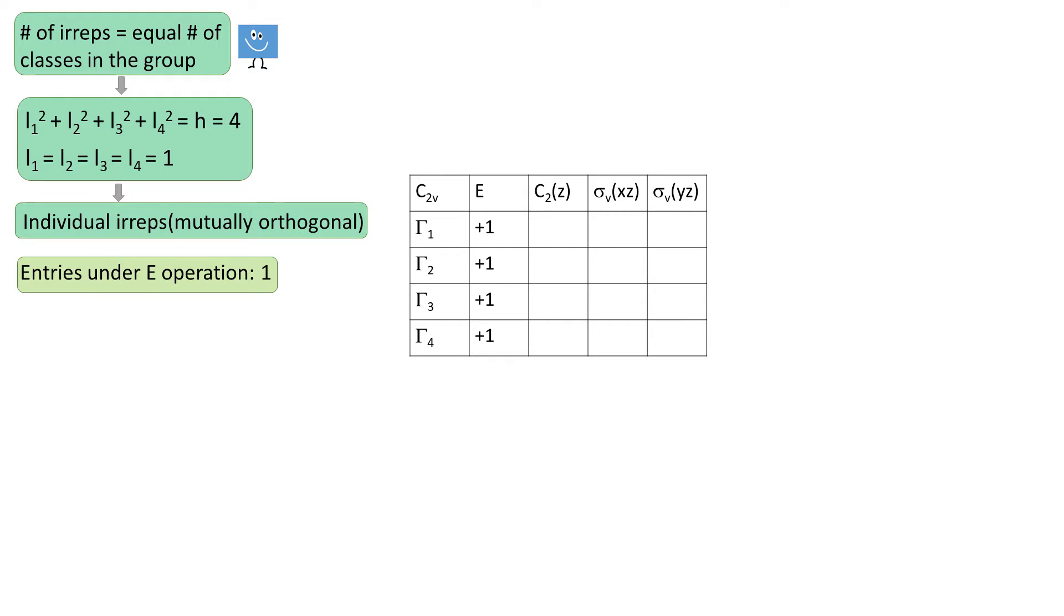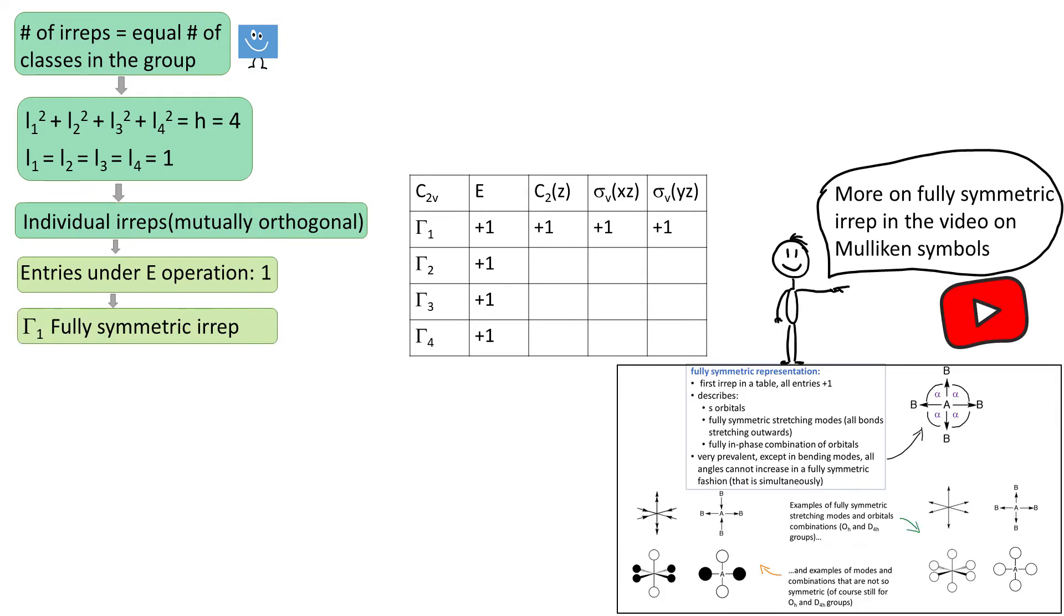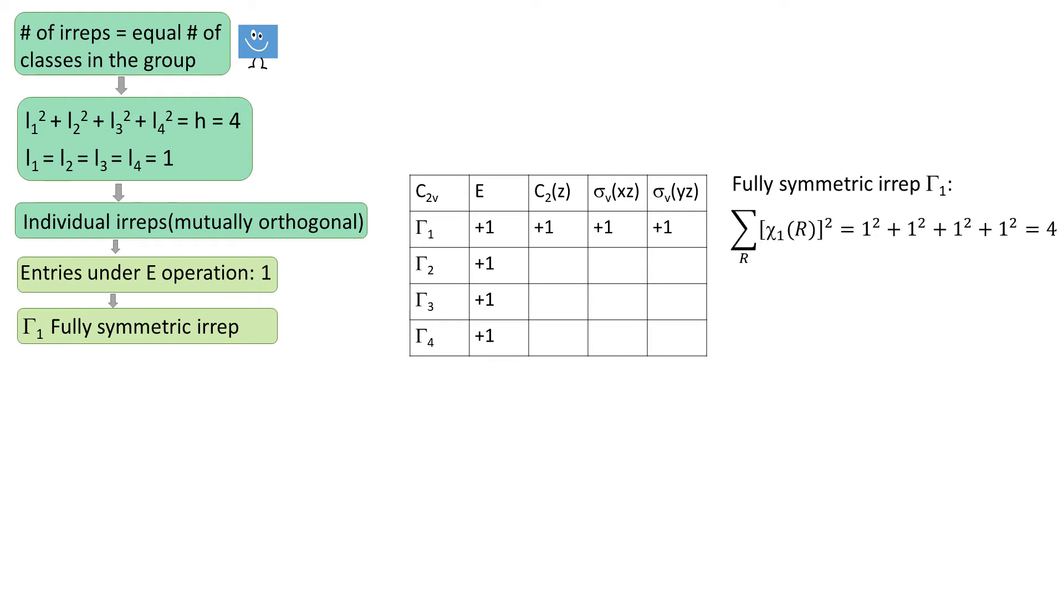Now let's figure out the individual EREPs. The first EREP is easy because it's the fully symmetric EREP as I told you about in a video on Mulliken symbols. We can double check if this vector indeed is one of our EREPs by taking a dot product of this vector with itself. It does give 4 as expected.